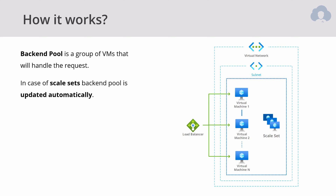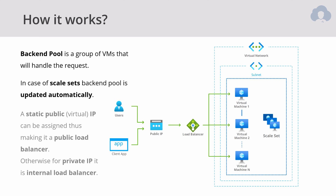Whenever a backend pool is already set, it is up to you to decide whether you want to expose that load balancer to the public internet or not. Whenever you do, you can assign a public IP allowing users and client applications to connect to it, and a static public virtual IP will be assigned, making it a public load balancer. Otherwise, a private IP will be assigned, making it an internal load balancer.